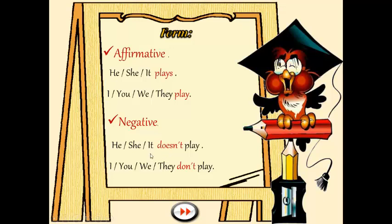Doesn't solamente se va a usar con he, she and it, y el verbo principal no va a llevar S. Las otras personas — I, you, we, they — van a usar el auxiliar también, pero en este caso va a ser don't. Y play, el verbo principal, por supuesto no va a tener ningún cambio. No lo tiene arriba, mucho menos lo puede tener acá abajo.